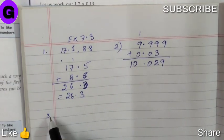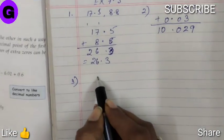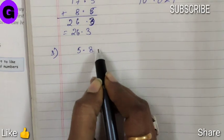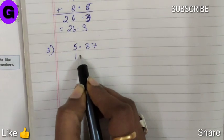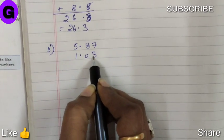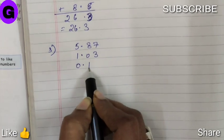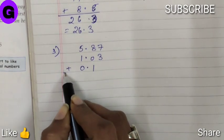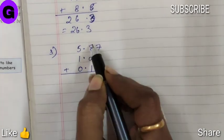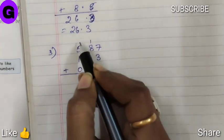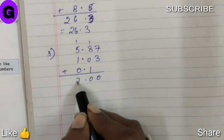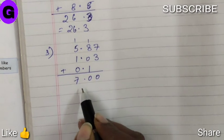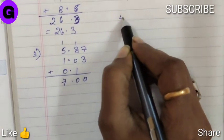Sum number three. 5.87, 1.03, 0.1. We will add them. This is the answer.